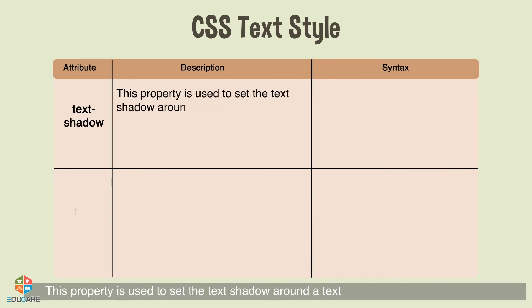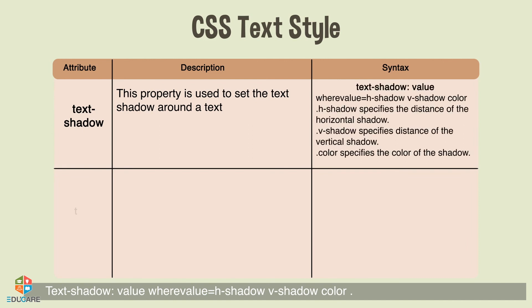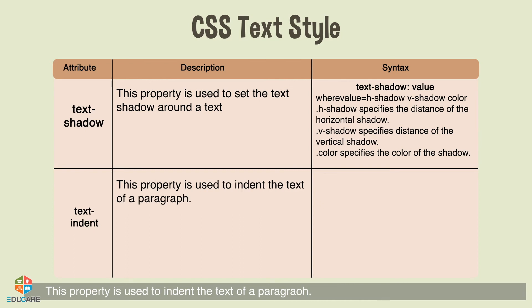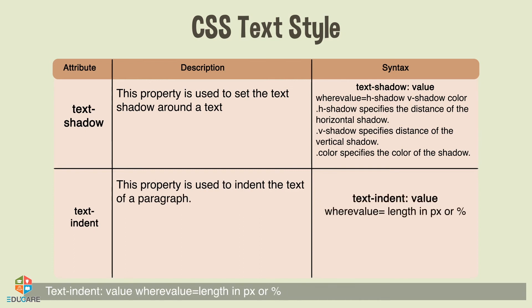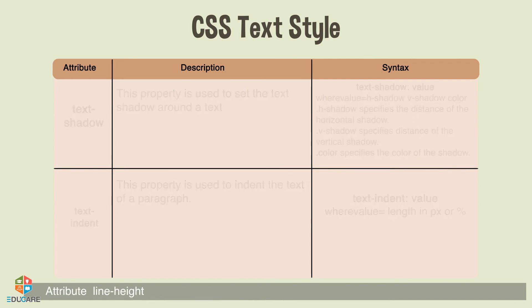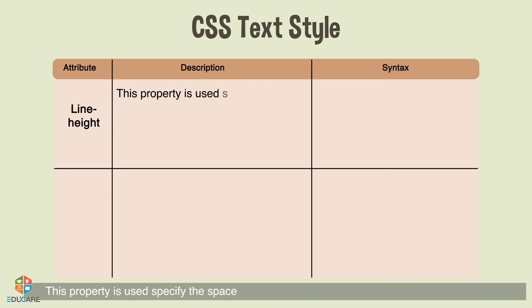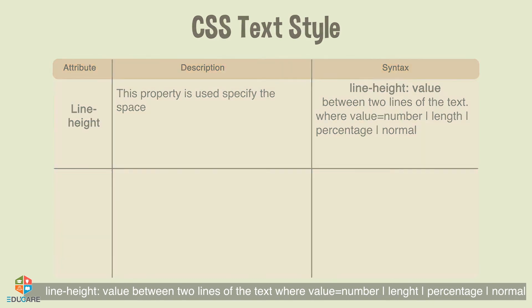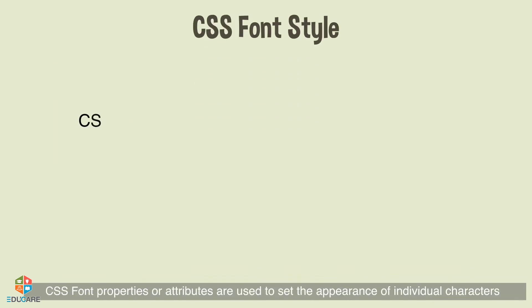The text-shadow property is used to set a shadow around text. Its value consists of h-shadow (horizontal shadow distance), v-shadow (vertical shadow distance), and color (the color of the shadow). The text-indent property is used to indent the text of a paragraph; its value is a length in pixels or a percentage. The line-height property is used to specify the space between two lines of text; its value can be a number, length, percentage, or normal.